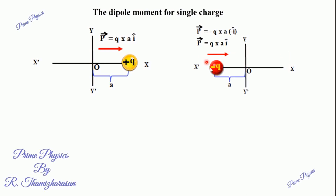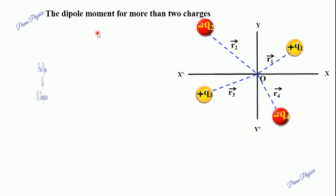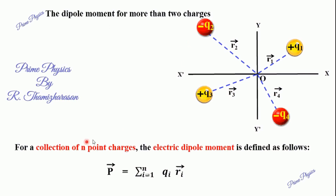From left to right: the negative charge and the electric moment direction is away from the charge — from the negative charge towards the positive charge. For more than two charges, suppose we have n number of point charges, the total dipole moment P is given by the general formula summing all contributions.